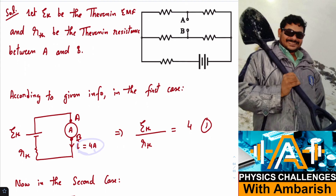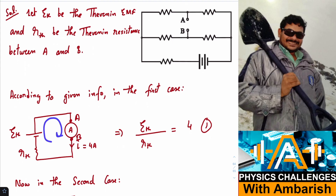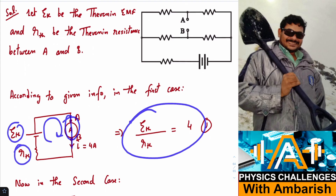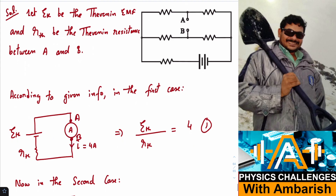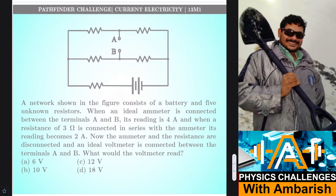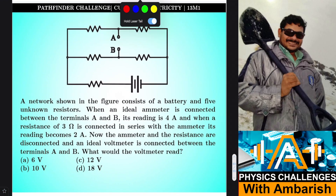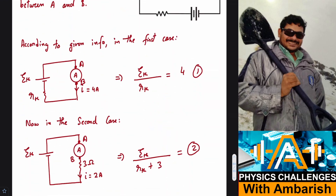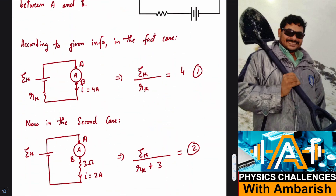In the first case, the current is given as 4 Ampere. Based on this equivalent circuit, the current through the circuit must be E_TH divided by R_TH, because the ammeter is ideal. So E_TH upon R_TH equals 4 Amperes — this is equation 1, as given in the question.